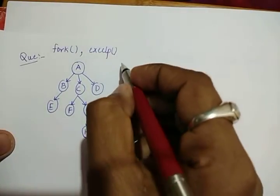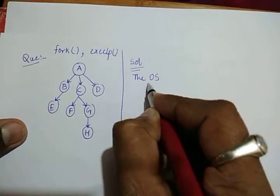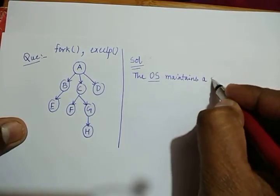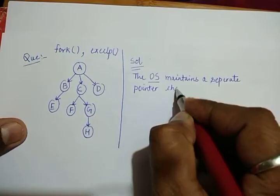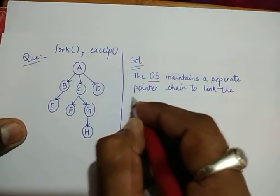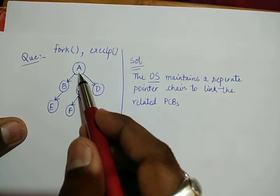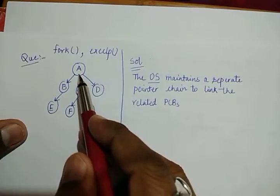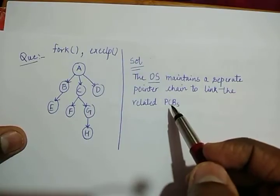For the solution, the operating system maintains a separate pointer chain to link the related PCBs. What I mean to say is that all these child processes are interconnected and each of these processes has its own process control block. So the operating system maintains a separate pointer chain to link the related PCBs.